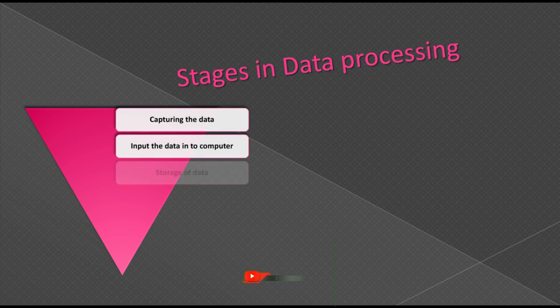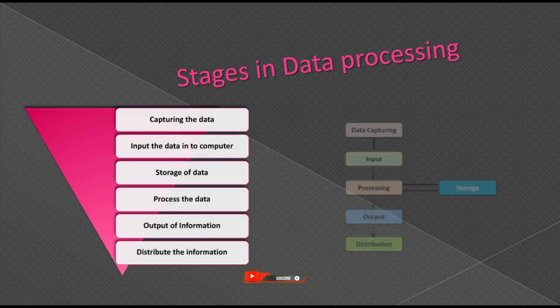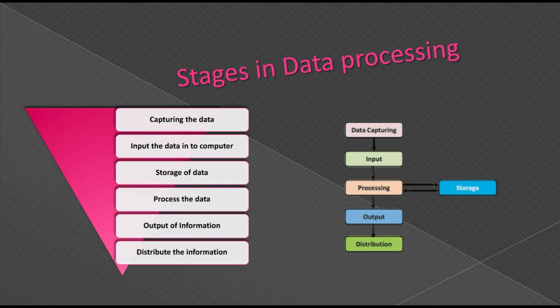There are six stages in data processing: one, capturing the data; two, input the data into computer; three, storage of data; four, process the data; five, output of information; six, distribute the information. These are the six stages in data processing.